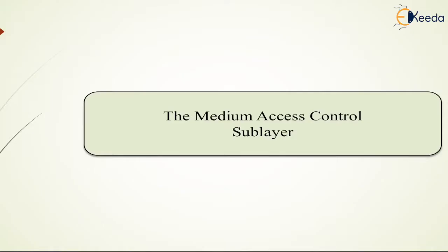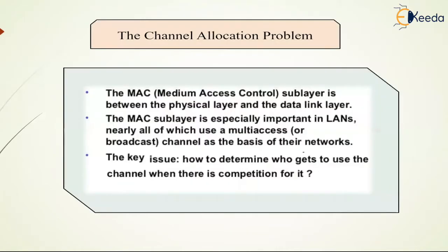The medium access sublayer is a part of the data link layer. It deals with how to determine who may use the channel next when the network consists of a single shared channel. The layer is also known as medium access control sublayer.